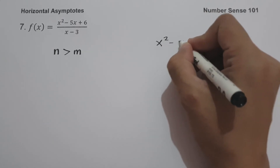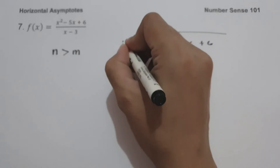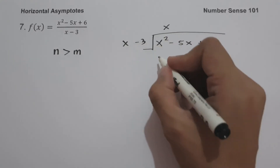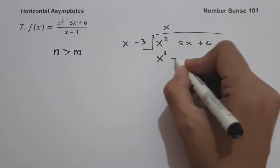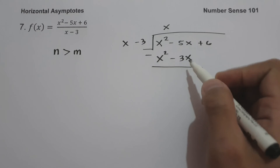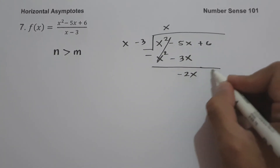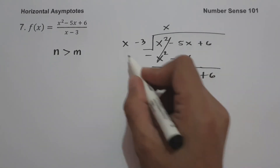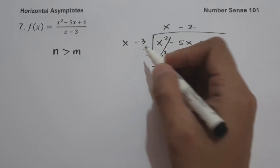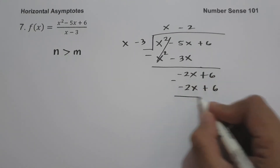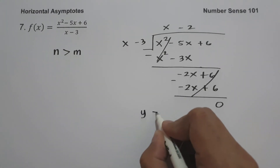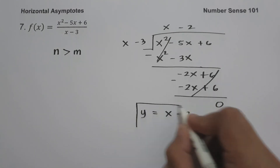We divide x squared minus 5x plus 6 by x minus 3. x squared divided by x gives x. Then x times (x minus 3) gives x squared minus 3x. Subtracting, we get negative 2x, then bring down 6. Negative 2x divided by x gives negative 2. Negative 2 times (x minus 3) gives negative 2x plus 6. Subtracting, the remainder is 0. Therefore, our oblique asymptote is y equals x minus 2.